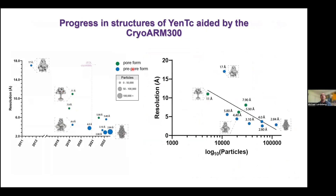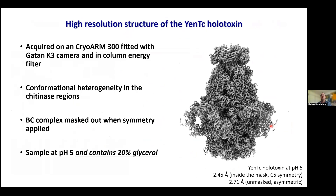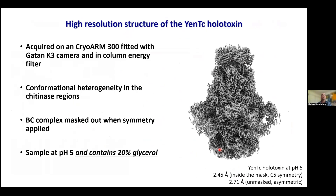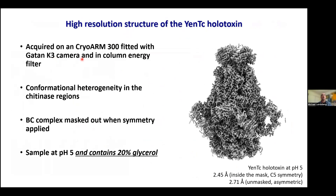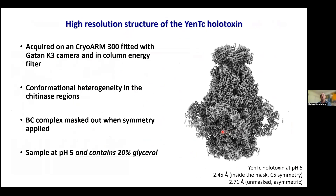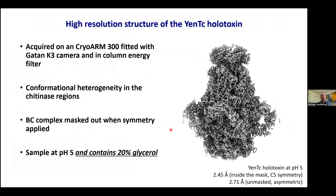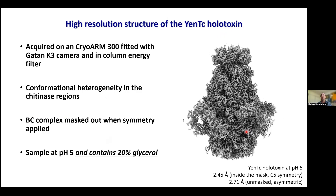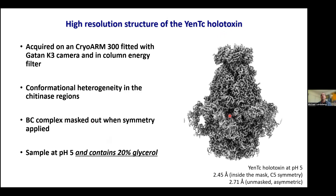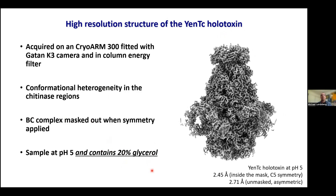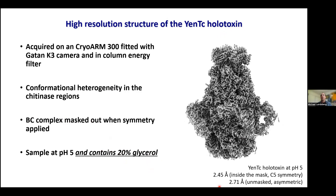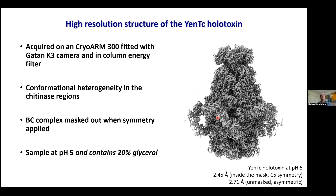Finishing up with a very recent structure of the NtC collected on the CryoARM microscopes at UQ: we've pushed the structure to around 2.8 Ångströms, and the most recent structure has a resolution inside the mask of 2.45 Ångströms. This was collected on our CryoARM 300 fitted with a Gatan K3 camera and an in-column energy filter. There's significant conformational heterogeneity in the chitinase regions, which is why they're excluded from the mask. Notably, 20% glycerol was added to the sample for cryoEM preservation, and yet this is still the highest-resolution NtC structure to date — a very nice result from PhD student Solace Roach.